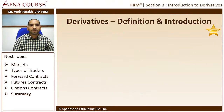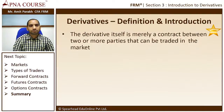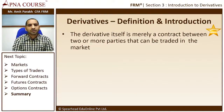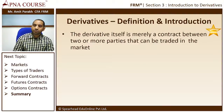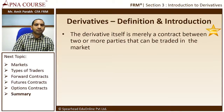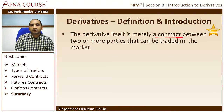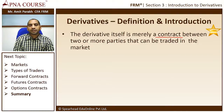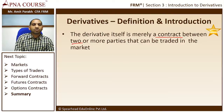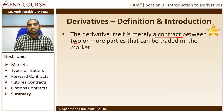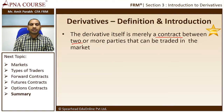Introduction to derivatives: a derivative is a contract between two or more parties that can be created and traded in the market. It can be legally enforced. Some derivatives are traded in the exchange, while others are agreements strictly between two parties — sometimes endorsed to a third party, or unwound between the original two parties.